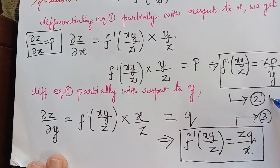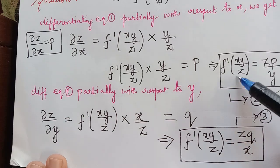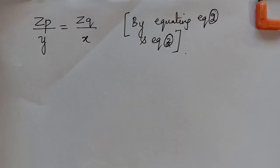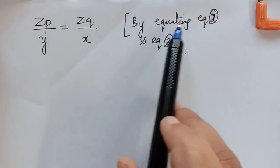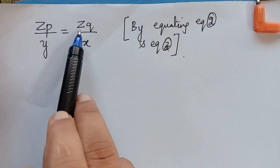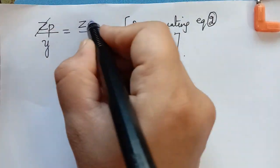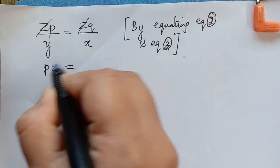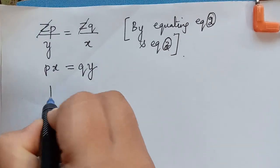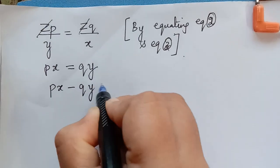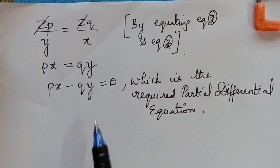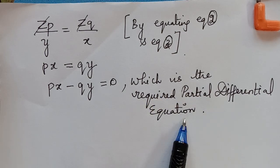We observe that from equation 2 and equation 3 we can equate both equations. So zp by y will be equal to zq by x. z and z get cancelled, and cross multiplying we get px equal to qy. Therefore px minus qy is equal to 0. This is the required partial differential equation.